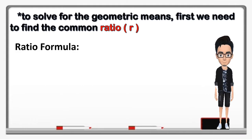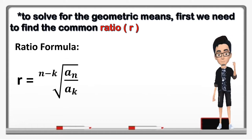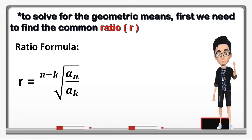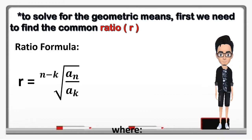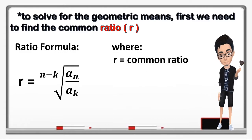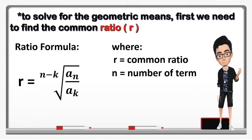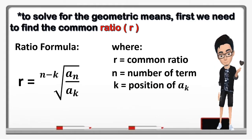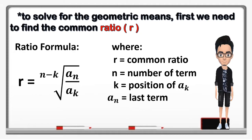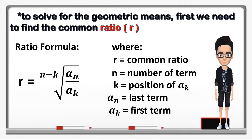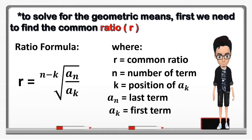The ratio formula is: r is equal to the (n minus k)-th radical of a sub n over a sub k. Wherein r is our common ratio, n is our number of terms, k is the position of a sub k, a sub n is our last term, and a sub k is our first term. Now let's try.